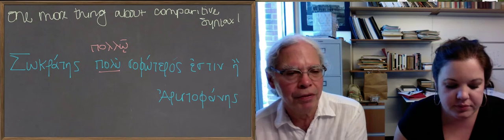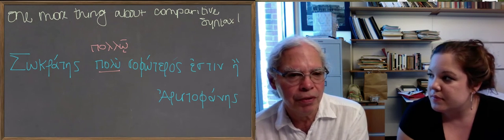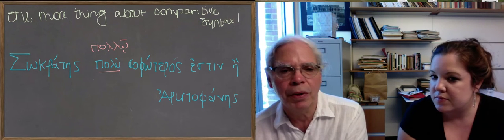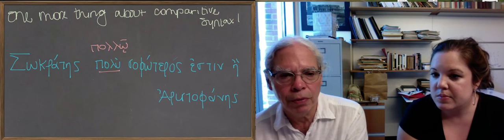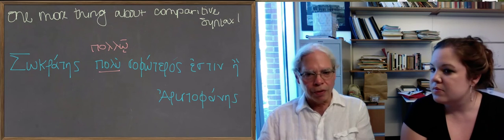Πολύ, that's nominative or accusative singular neuter, functions in the same way. So you can say Socrates is much wiser, or you can say Socrates is much the wisest using either πολύ or πολλῷ. So this is a syntax that you can use with comparatives or superlatives.